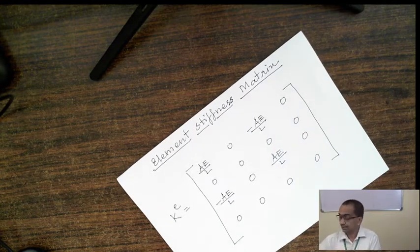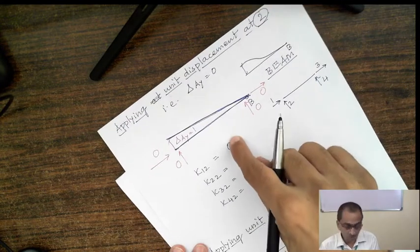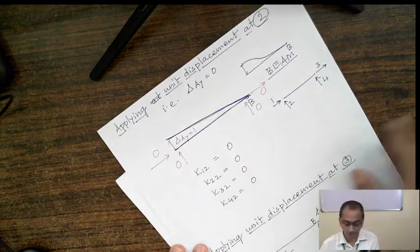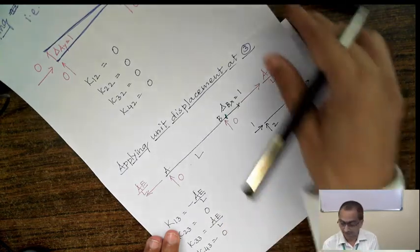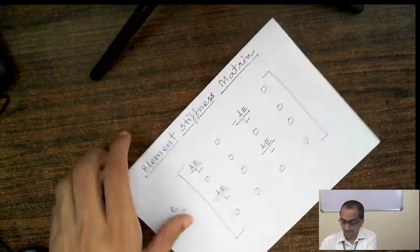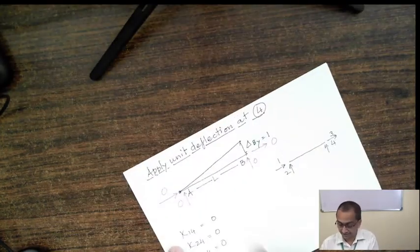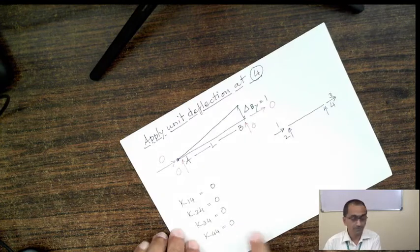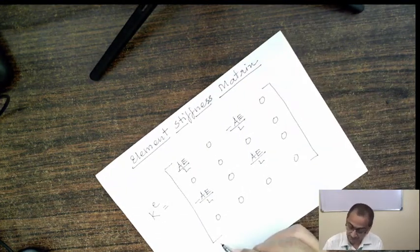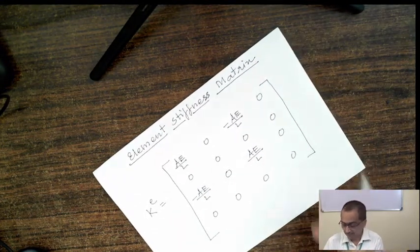To summarize what we have done: we generated the first column (AE/L, 0, -AE/L, 0), the second column (all zeros), the third column (-AE/L, 0, AE/L, 0), and the fourth column (all zeros). So the full element stiffness matrix for the truss element is now generated.